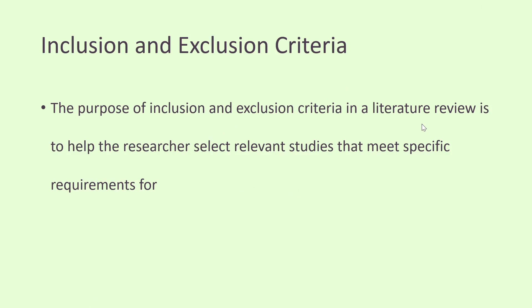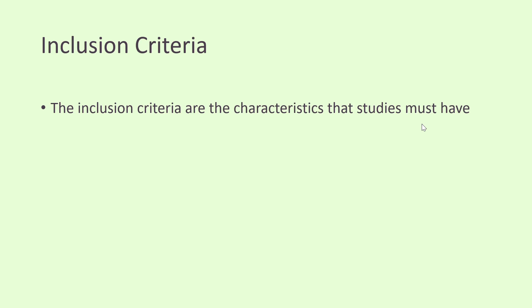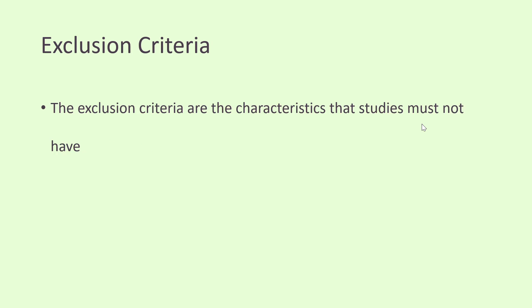The purpose of inclusion and exclusion criteria in a literature review is to help the researcher select relevant studies that meet specific requirements for the review. The inclusion criteria specify the characteristics or qualities that a study must possess in order to be included in the review. In comparison, the exclusion criteria specify the characteristics or qualities that would disqualify a study from being included.